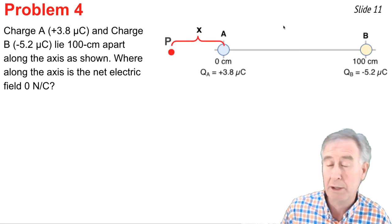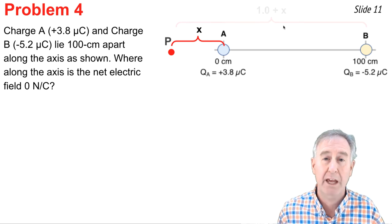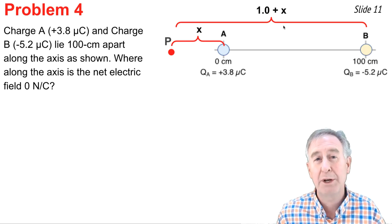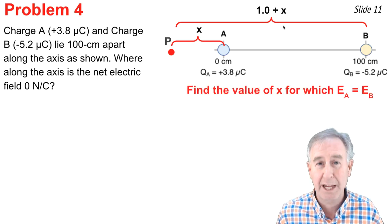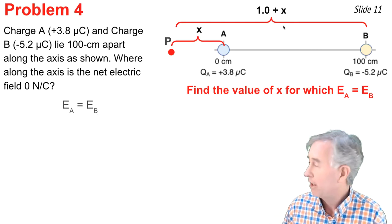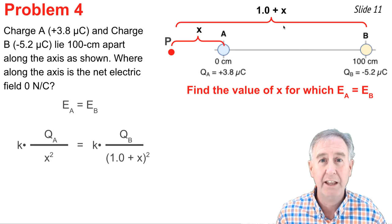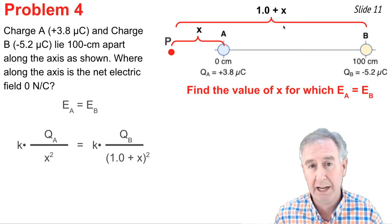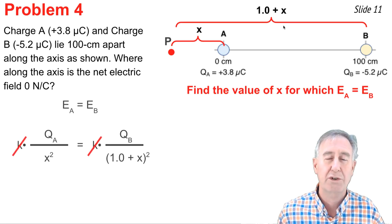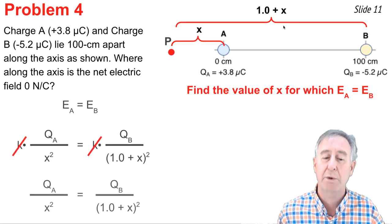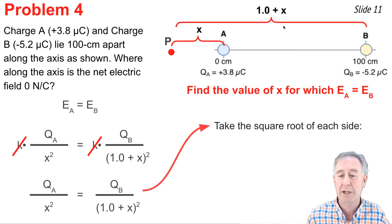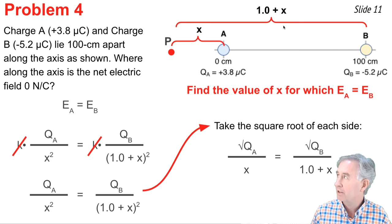I marked it there on the diagram as point P. It's some distance X from A, and if it's that far from A, it's 1 meter plus X from charge B. And I want to know what's the value of X for which EA equals EB. So I'm going to start there. I start with expressions that EA is equal to EB, and I just write it out like that. You'll notice my denominators are X and (1 + X) quantity squared, and then I'm going to cancel the value of K since it shows up both places and simplify my equation. And then I'm going to take the square root of both sides of this equation, and when I do, it looks something like this.